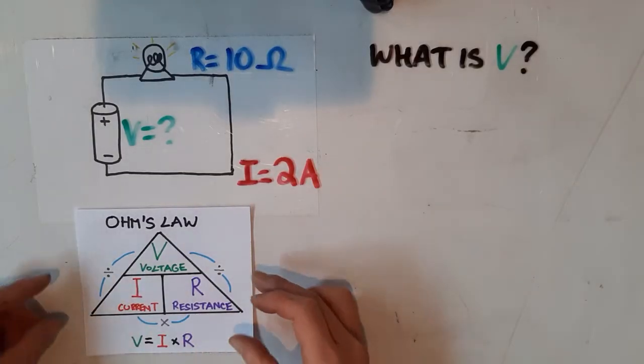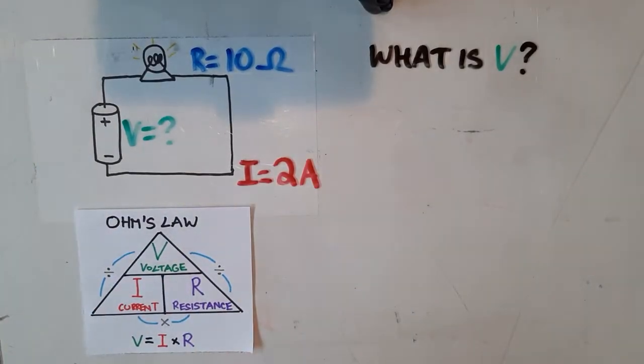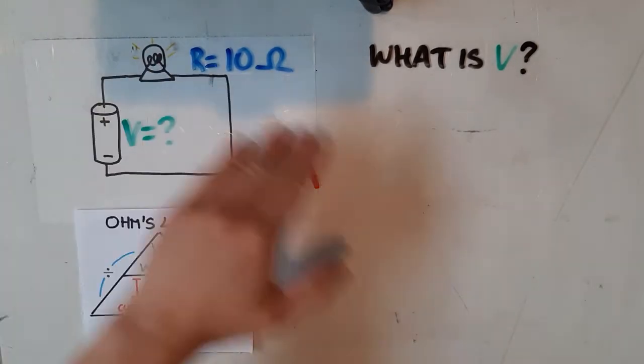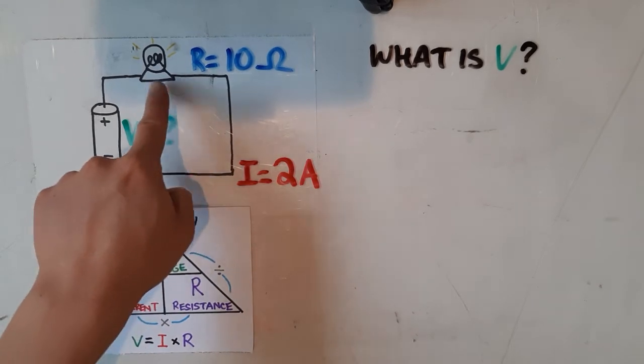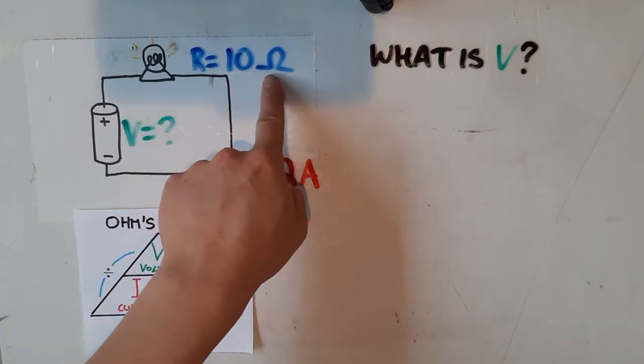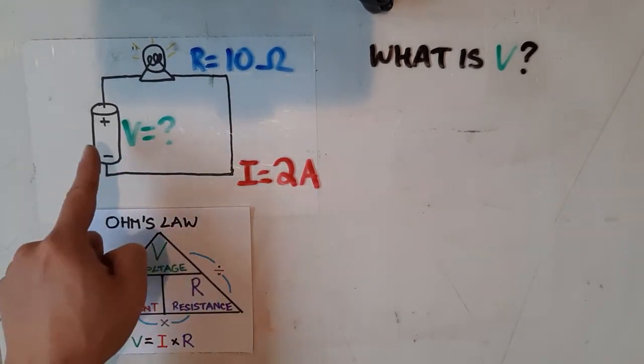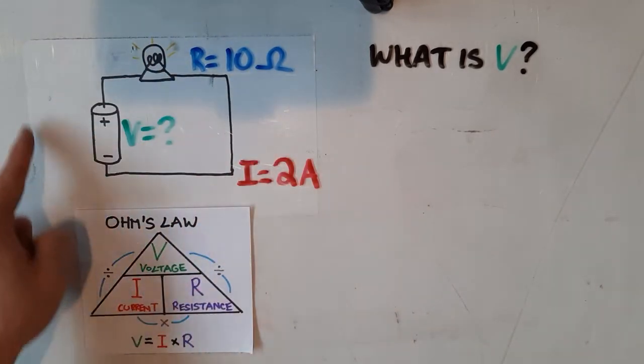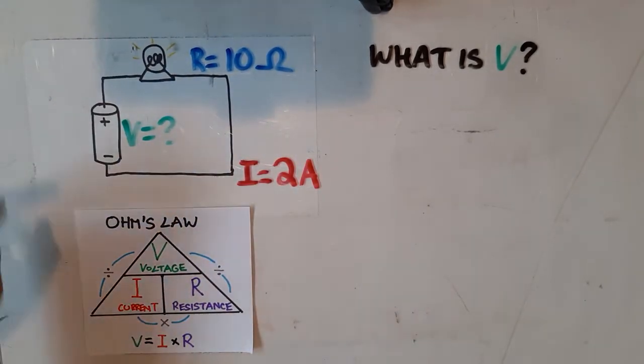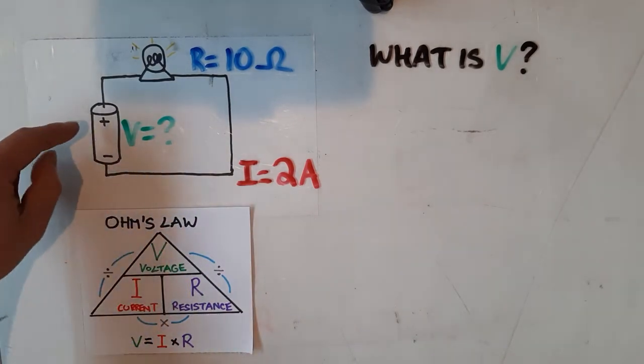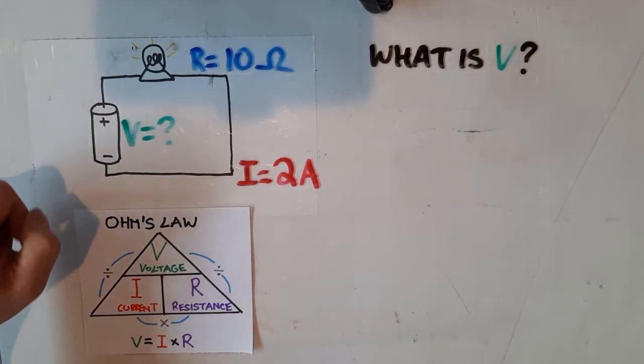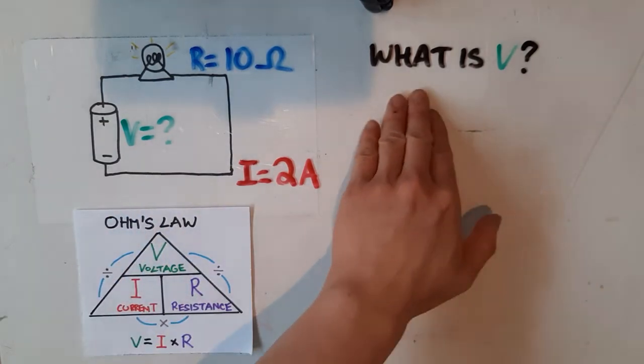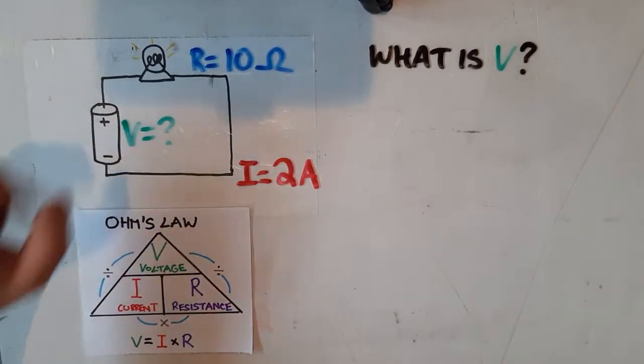All right, so let's apply Ohms' law to solve a practical problem over here. So right now, we've got our circuit, and we know that there's a light bulb that produces 10 Ohms of resistance, and we also know that there is 2 amps of current flowing through the circuit, but what we don't know is the voltage that's being supplied by this battery over here. So what we're going to do is we're going to use Ohm's law to answer the question, what is the voltage of this battery?